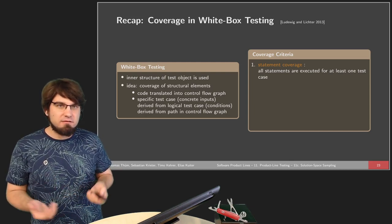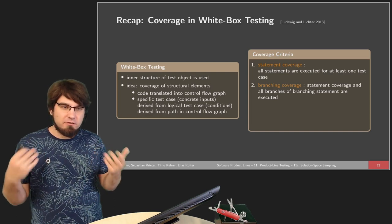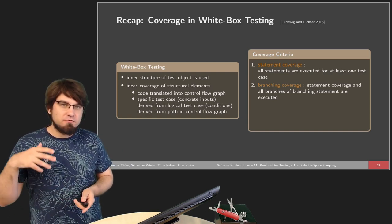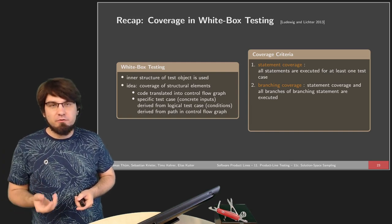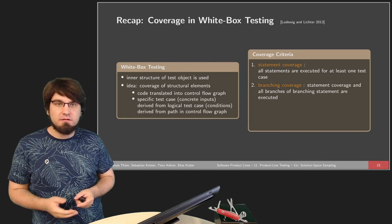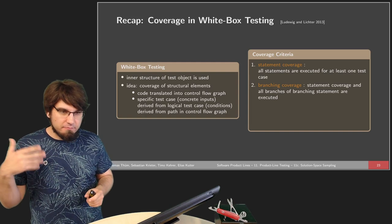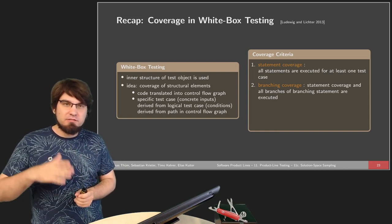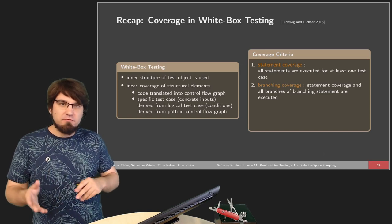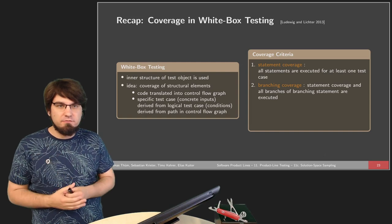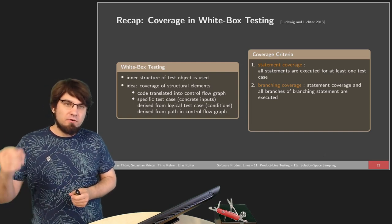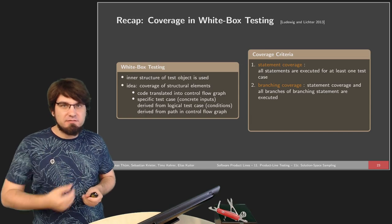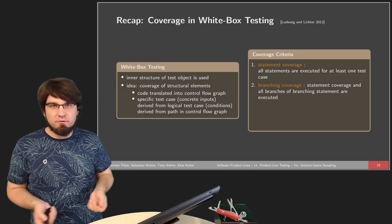Statement coverage often isn't enough — it doesn't detect all faults. So we can build upon it. Another coverage criterion is branching coverage: we not only cover all statements, but we also look at branching statements like ifs, loops, and jumps that influence control flow. When control flow branches, we want to make sure we take every branch — going inside the if, going into the else, and skipping the statement entirely when appropriate.